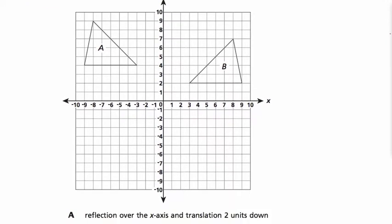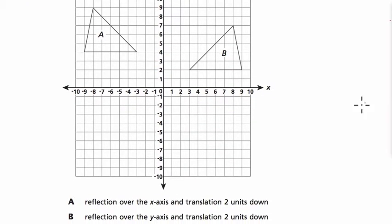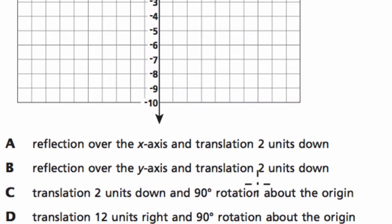Let's look at the options they give us, and that might be where you pause the video and try it on your own. So why don't you read through the options and try it on your own. Okay, so first they say, is it a reflection over the x-axis and translation two units down.